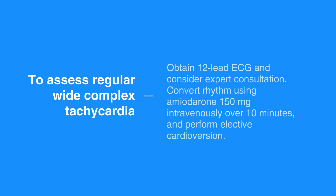To assess regular wide complex tachycardia, or probable VT, obtain a 12-lead ECG and consider expert consultation. Convert rhythm using amiodarone 150 mg intravenously over 10 minutes and perform elective cardioversion.